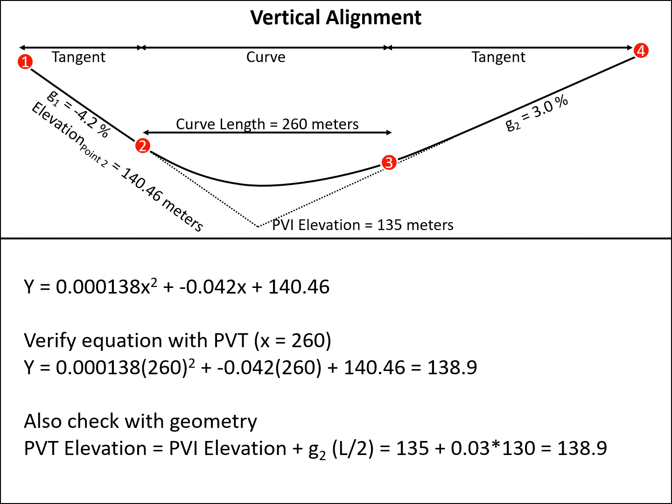We can use any other value for X to find the elevation at any point along the curve from the PVC to the PVT starting with an X of 0 and going up to a maximum X of 260 meters. This equation cannot be used for anything other than that range. The range has to be between 0 and 260 meters. Anything outside that range, you cannot use this equation to calculate.